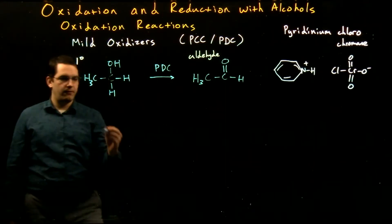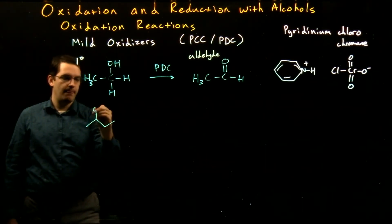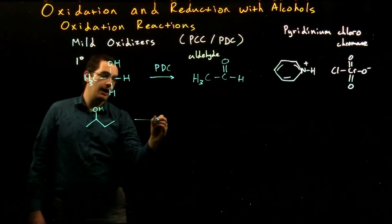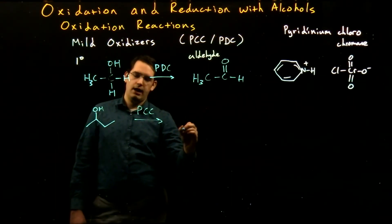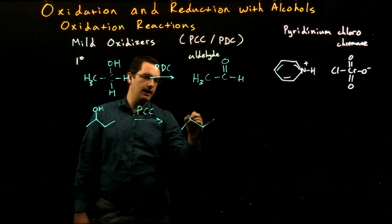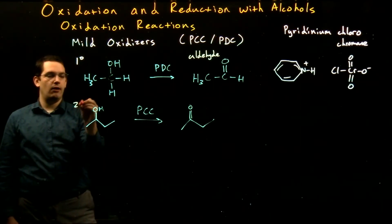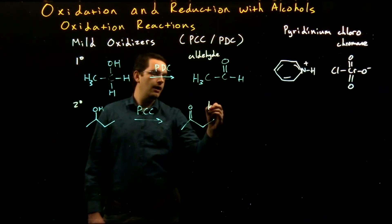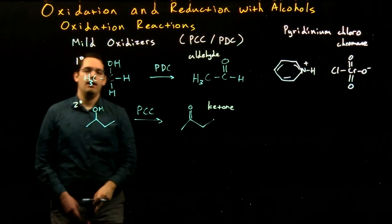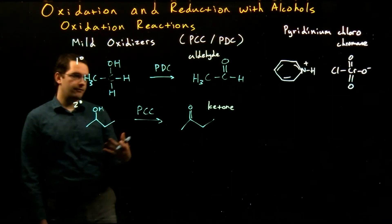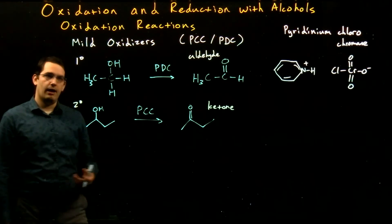So a primary alcohol with a mild oxidizer like PDC produces an aldehyde, and a secondary alcohol with PCC produces a ketone. A tertiary alcohol would not react because we can't form a double bond there without breaking the octet — five bonds would result.